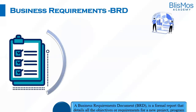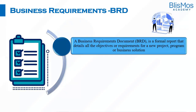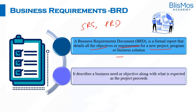A business requirement is a document — we also call it a BRD, SRS, or PRD. SRS is Software Requirement Specification, and PRD is Product Requirement Document. Any BRD or business requirements document is a formal report that details all the objectives or requirements of the project, program, or business solution being built. It also describes why we are building this product — in this context, the data warehouse — and the business need or objective.